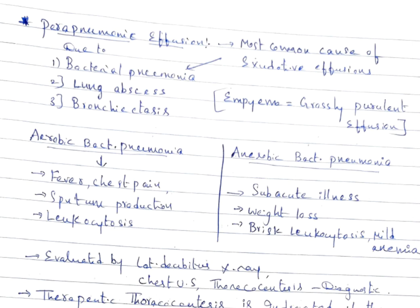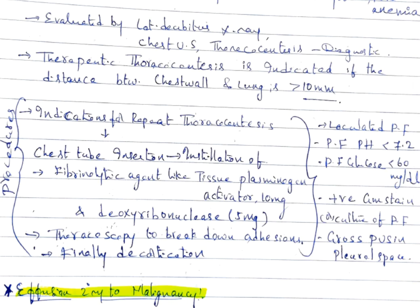Parapneumonic effusion is the most common cause of exudative effusions. It can be due to bacterial pneumonia, lung abscess, or bronchiectasis. Empyema is grossly purulent effusion. Aerobic bacterial pneumonia presents with fever, chest pain, sputum production, and leukocytosis. Anaerobic bacterial pneumonia presents with subacute illness, weight loss, brisk leukocytosis, and mild anemia. Parapneumonic effusions are evaluated by lateral decubitus x-ray or chest ultrasound.